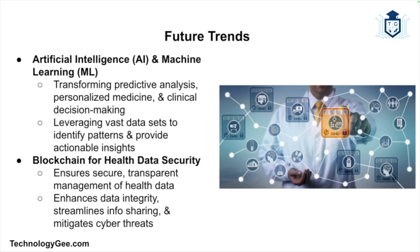Let's talk about some future trends in health information technology. The future of HIT is shaped by several emerging trends and advancements. One is artificial intelligence and machine learning — AI and machine learning will play a significant role in predictive analytics, personalized medicine, and clinical decision support. These technologies can analyze vast amounts of data to identify patterns and provide actionable insights. Blockchain technology offers a secure and transparent way to manage health data, enhancing data integrity, streamlining information sharing, and protecting against cyber threats.